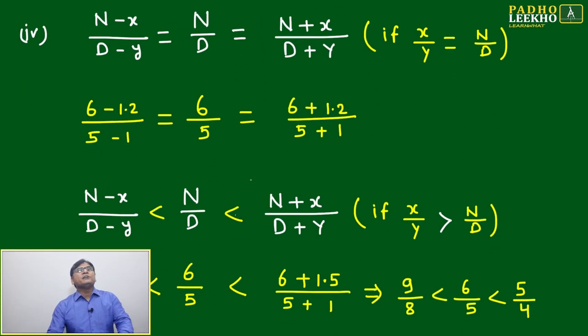Next we'll come to property number four, and property number four will deal with the same property number two, extension of that. Like there, we have added and subtracted numerator and denominator by the same number, absolute number x.